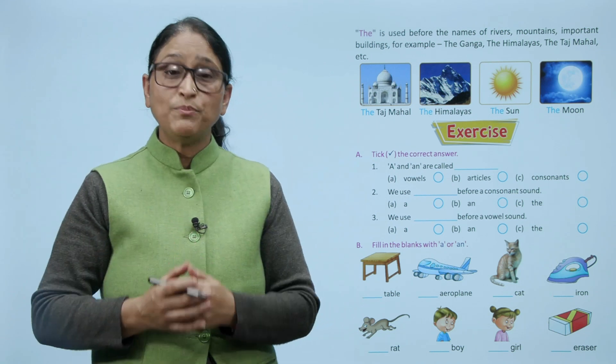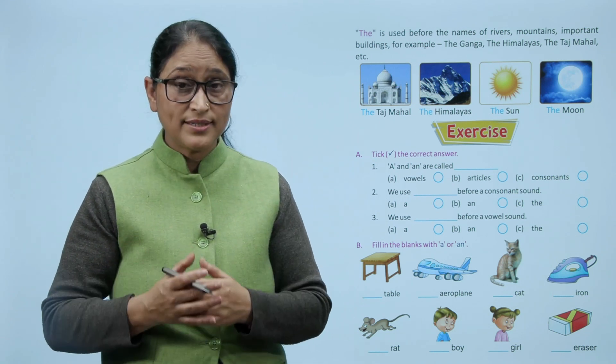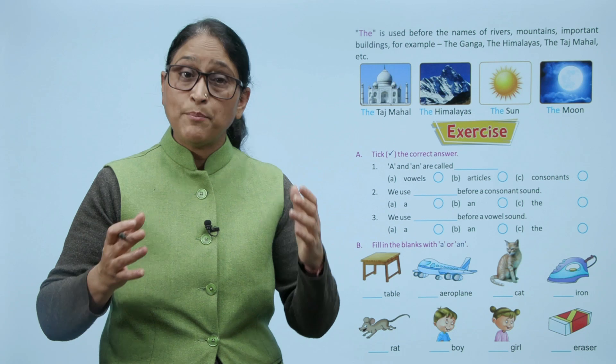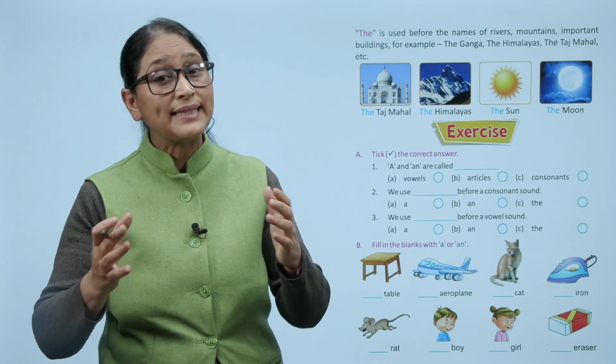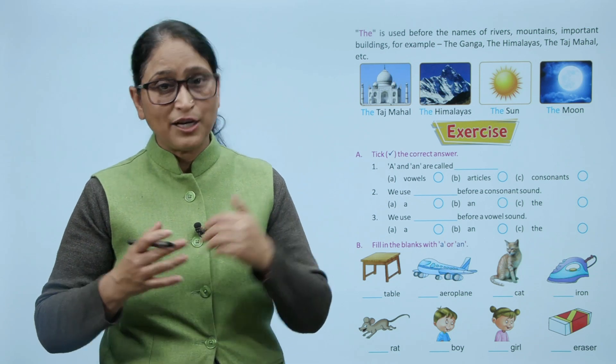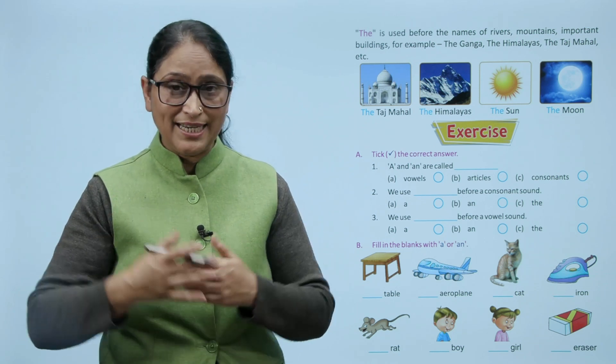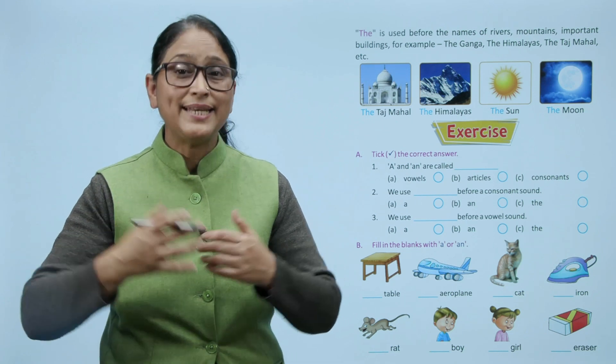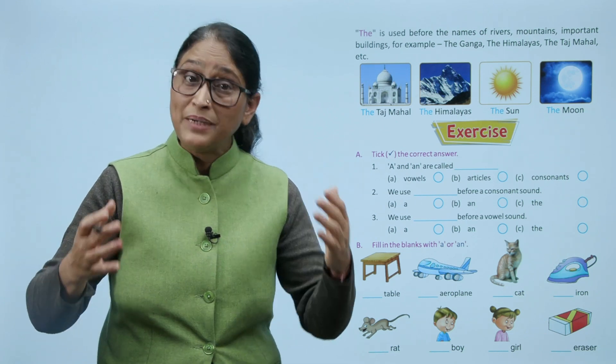The is used before the names of rivers, mountains, important buildings. For example, The Ganga, The Himalayas, The Taj Mahal. The ka use karenge river ke naam se pehle, mountains ke naam se pehle, important buildings ke naam se pehle.